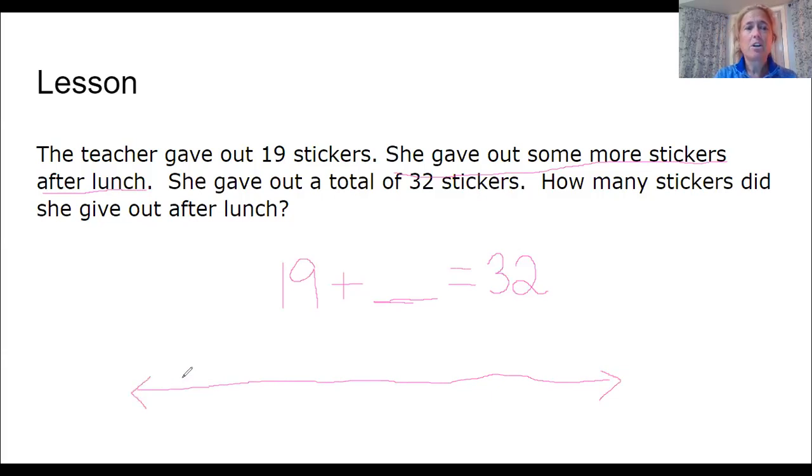And we're going to start on our open number line at the number 19. Now an open number line is nice because we can start our number line wherever we want. We don't have to start at zero. We can start at wherever we want. That's why it's called an open number line. And of course we need to see how many it's going to take to get us to the number 32.